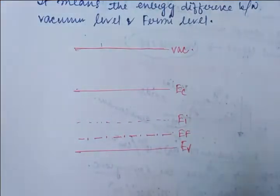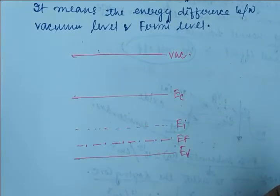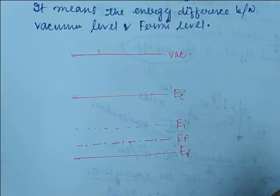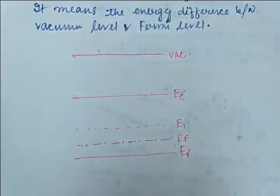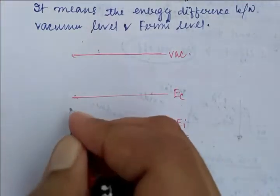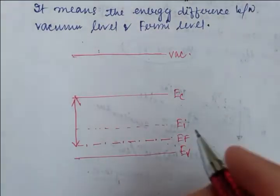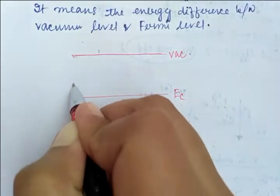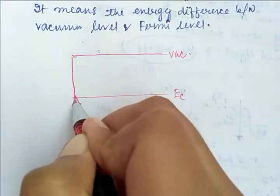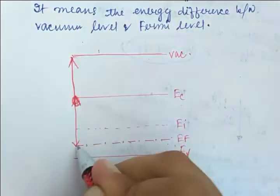So what is the work function? The work function is the energy difference between your vacuum level and the Fermi level — from this vacuum level down to this Fermi level.